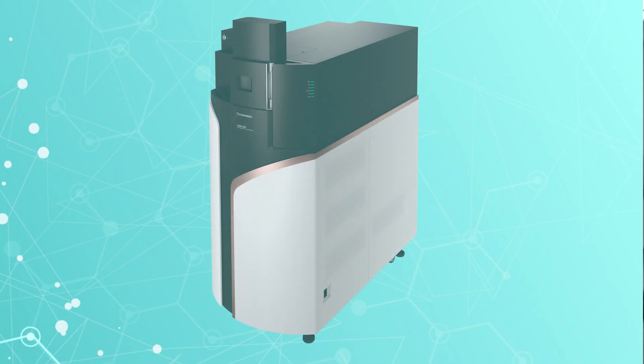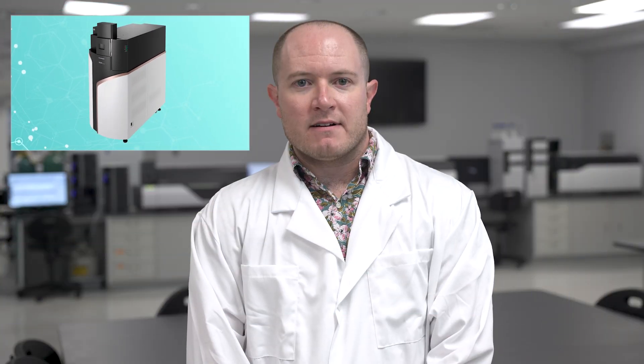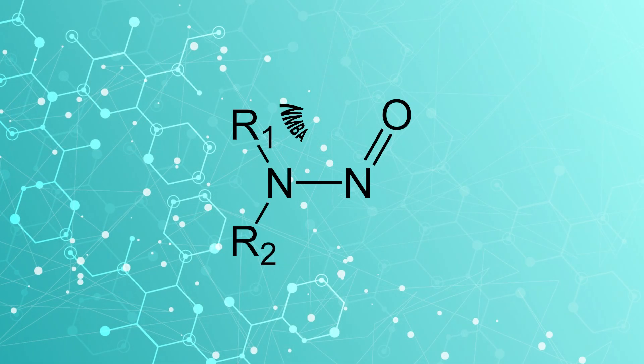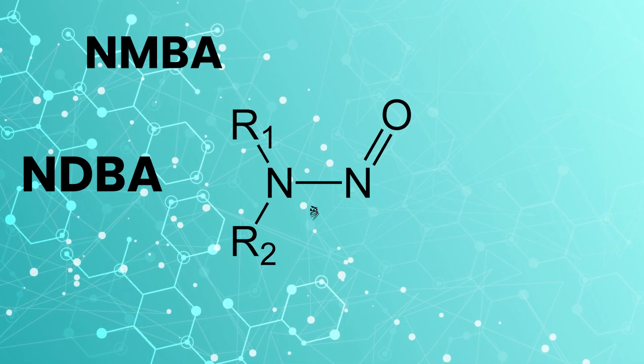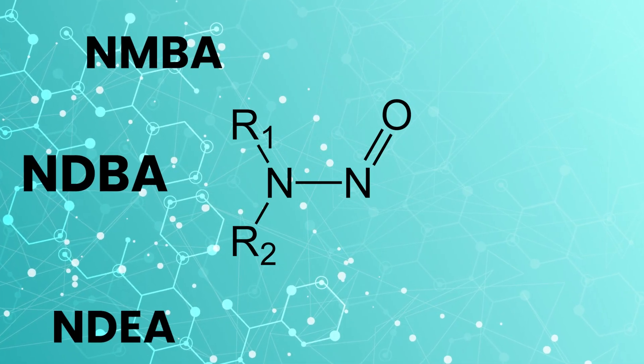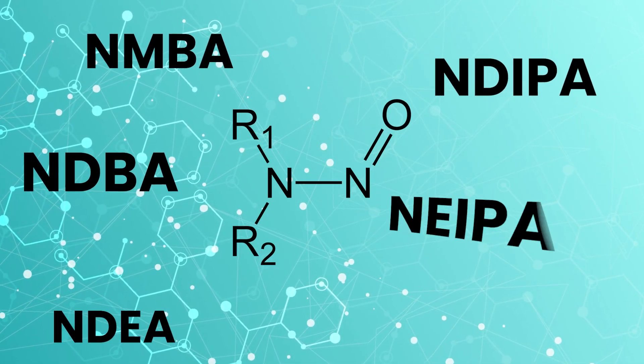Luckily, Shimadzu has solutions designed to address all four procedures outlined in USP General Chapter 1469. Procedure 1 incorporates high-resolution liquid chromatography mass spectrometry, and it specifically targets the following six nitrosamines.